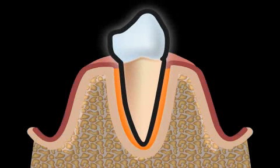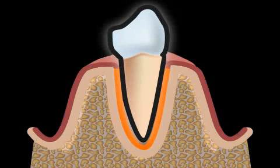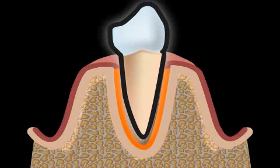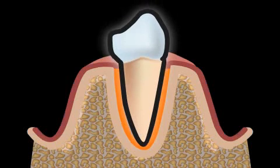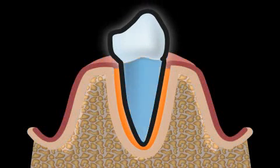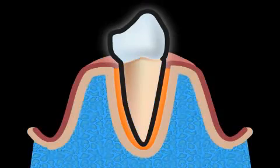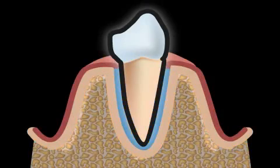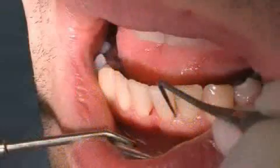Periodontology is the Latin word for the study of the periodontal apparatus. The periodontal apparatus consists of the gums, the tooth root, the bone, and the periodontal membrane.